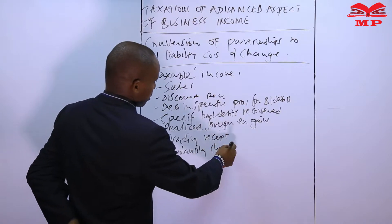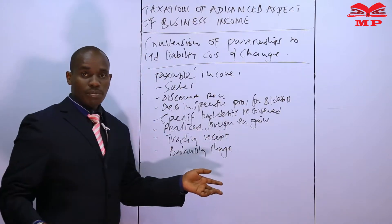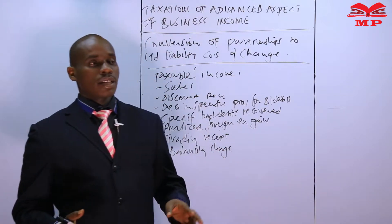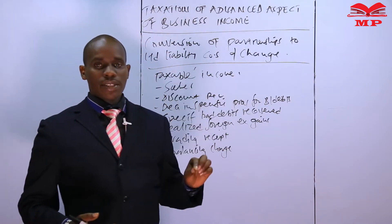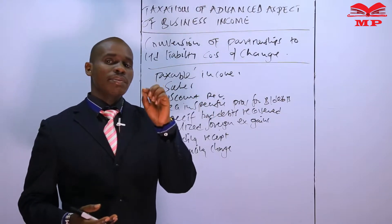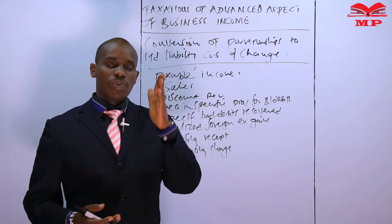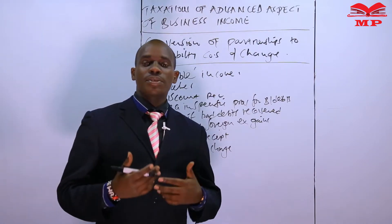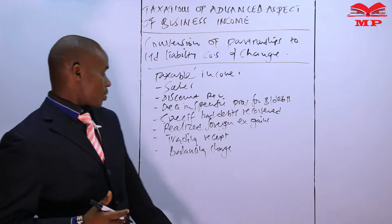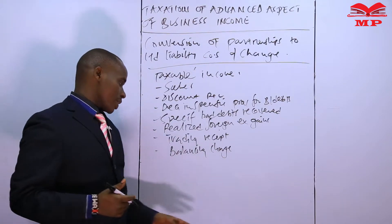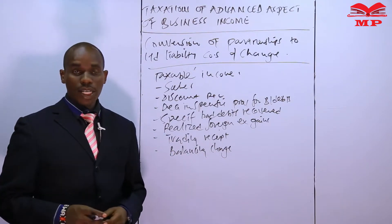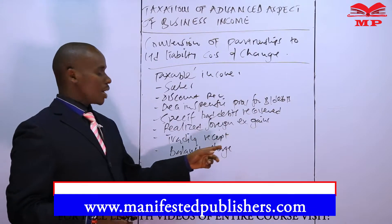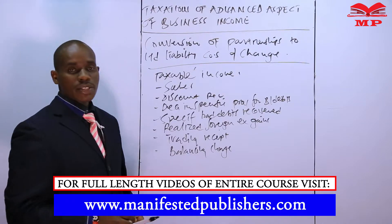Balancing charge is also considered a taxable income. Balancing charge is the profit realized if you sell assets of a given class of wear and tear at a price higher than the written-down value when the business is closing down. Trading receipt and balancing charge are similar — trading receipt is when the business is continuing, and balancing charge is when the business is closing down.